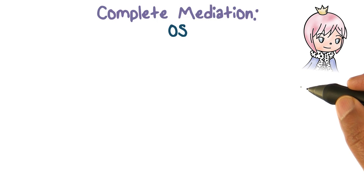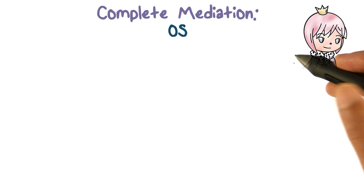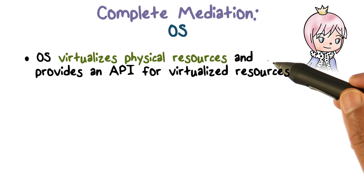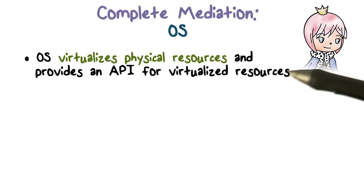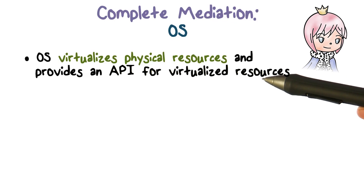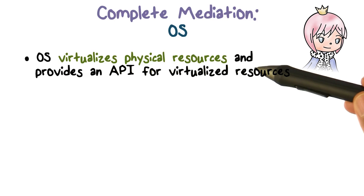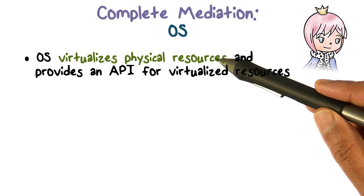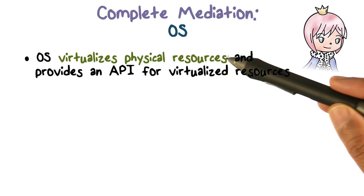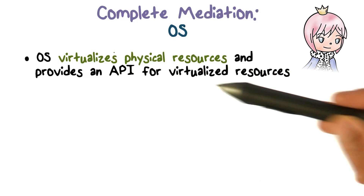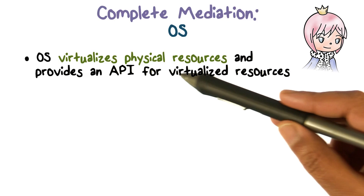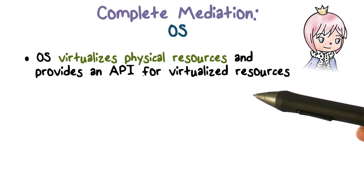Complete mediation actually comes about because of one other thing the operating system does. At user level, we have what we call virtual resources — we don't have physical resources. There is no way for user code to actually name or target a physical resource or ask for a physical resource. You have only virtual resources, and the operating system gives you an API on how those virtual resources can be used.